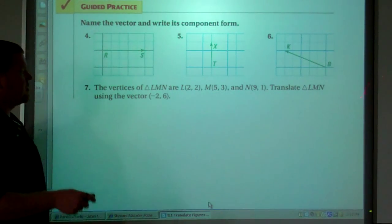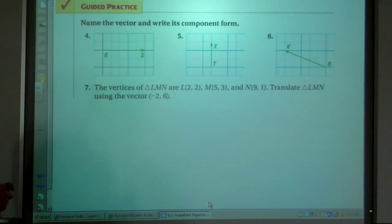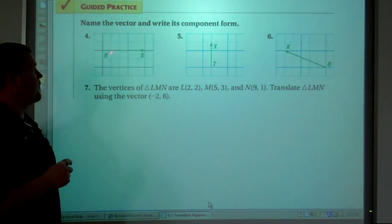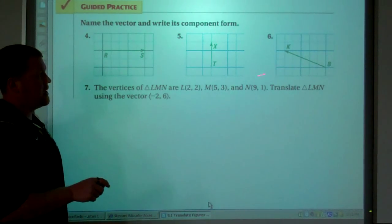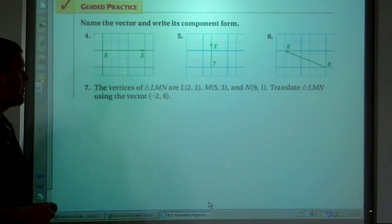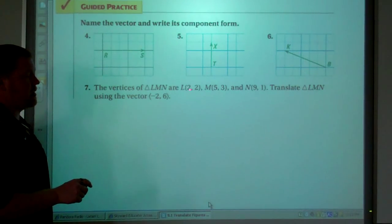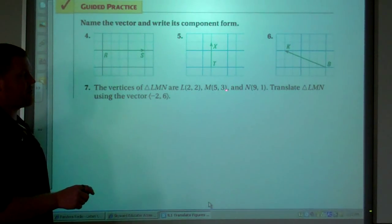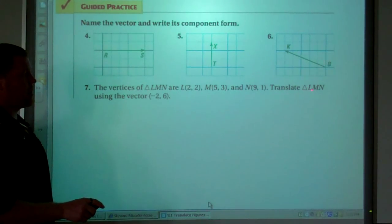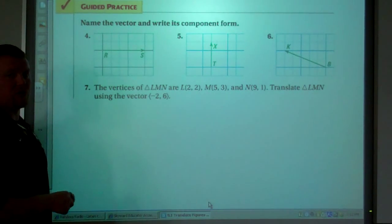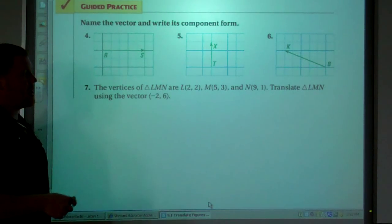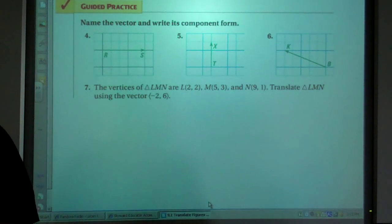Here are four problems I would like you to try for tomorrow. Name the vector and write its component form for RS here, TX, and BK. And then I want you to translate triangle LMN. Two, two, five, three, nine, one. And we want to translate it using the vector negative two, six. So please try these four problems for tomorrow. Thanks a lot.